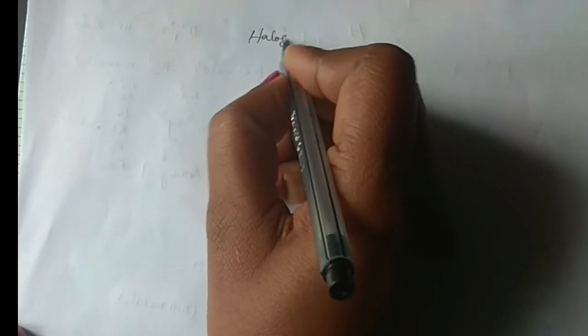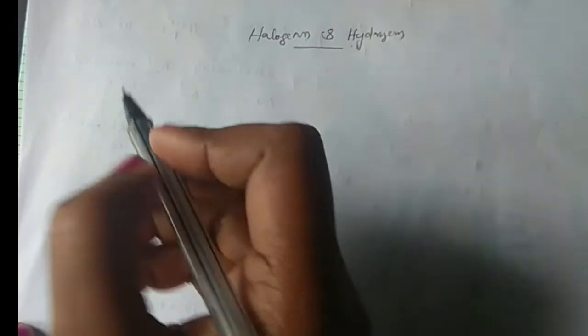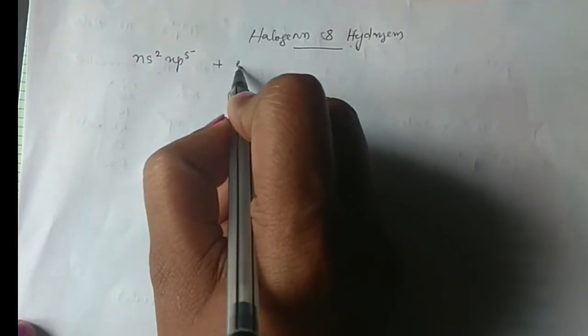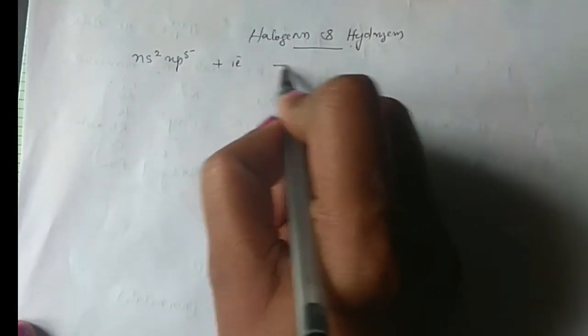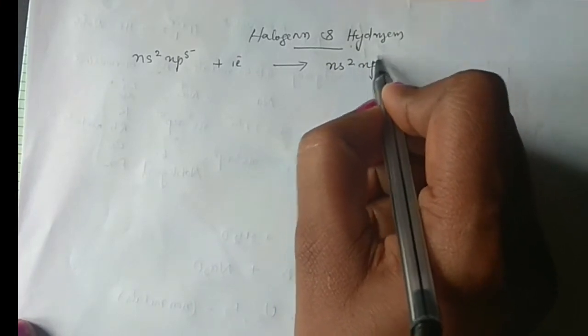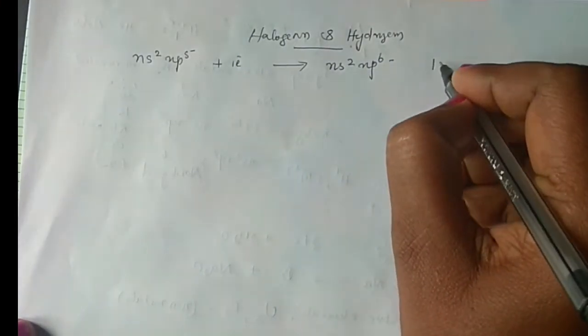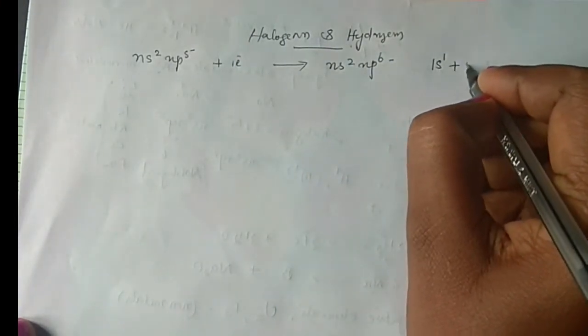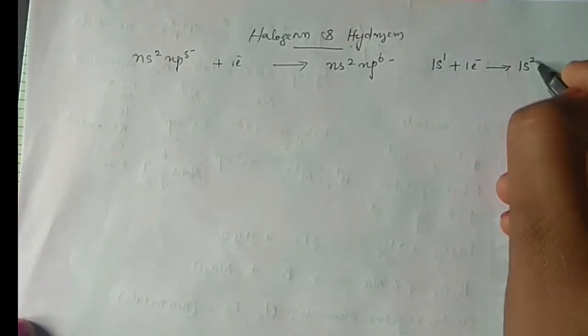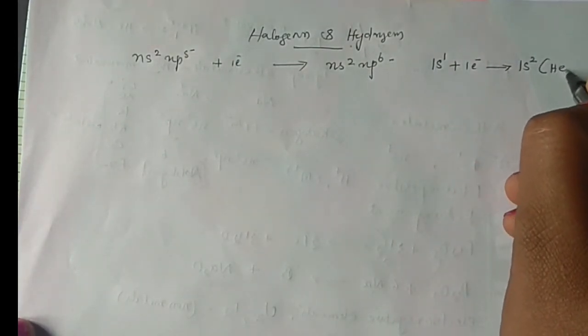Now, the resemblance of hydrogen with halogens. Halogens have the electronic configuration ns2 np5, so they need one electron to achieve stable noble gas configuration. Similarly, hydrogen with 1s1 configuration needs one electron to achieve helium's 1s2 noble gas configuration. The halogens — fluorine, chlorine, bromine, iodine — all accept one electron to gain stable noble gas configuration.